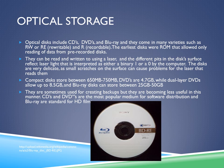Compact disks store between 650MB to 750MB. DVDs are 4.7GB in capacity, while dual-layer DVDs, also known as DL-DVDs, allow up to 8.5GB, and Blu-ray disks can store between 25 and 50GB. Optical storage disks are sometimes used for creating backups, but they are becoming less useful in this manner because of the increasing storage capacity of external hard drives. CDs and DVDs are the most popular medium for software distribution, and Blu-ray is the standard for high-definition films.